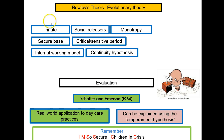When writing Bowlby's theory, you need to remember all of this. One way to remember is the acronym: 'I'm so secure, children in crisis' — standing for Innate, Monotropy, Secure base, Social releases, Continuity hypothesis, Internal working model, and Critical or sensitive period within the first two years. Try to remember the acronym because you need to be able to fully explain this as an evolutionary theory.